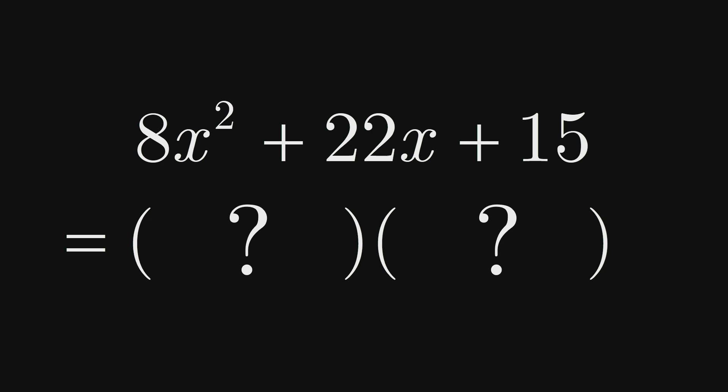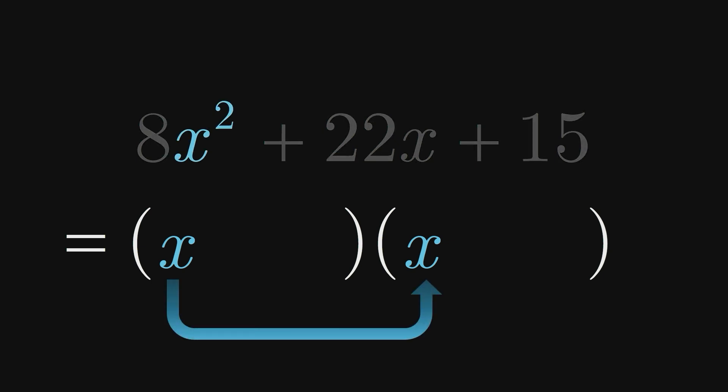Given that this trinomial has an x squared term, an x term, and a constant term, like the other trinomials we've factored, we might expect that its factored form will again consist of two binomial factors, and we would be correct. As usual, each factor will have an x term, which when multiplied account for the x squared in our original expression.